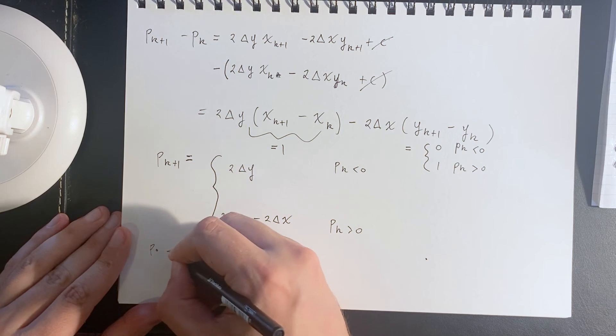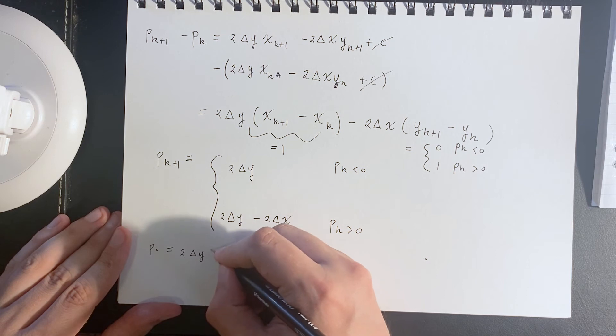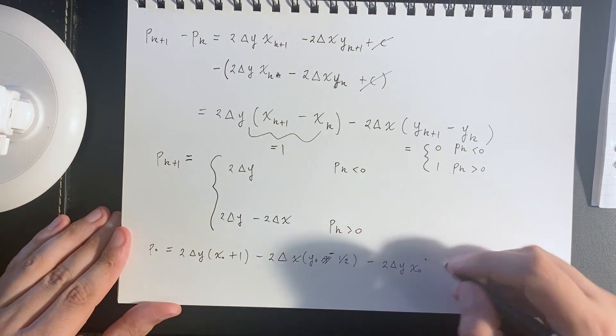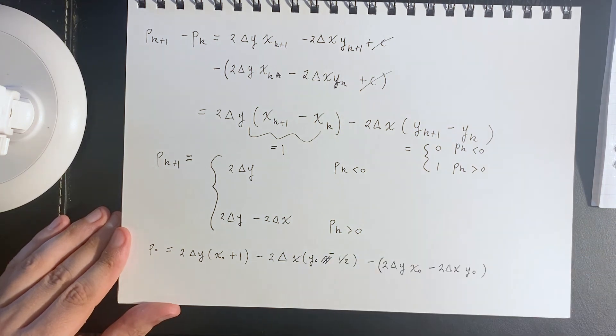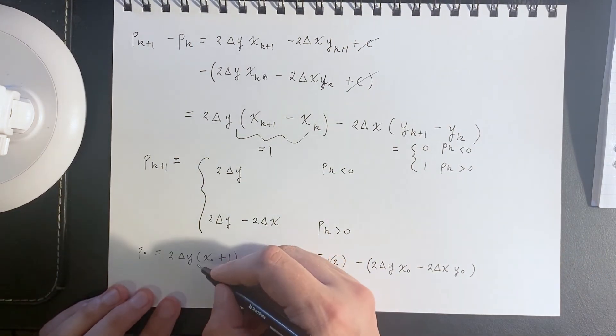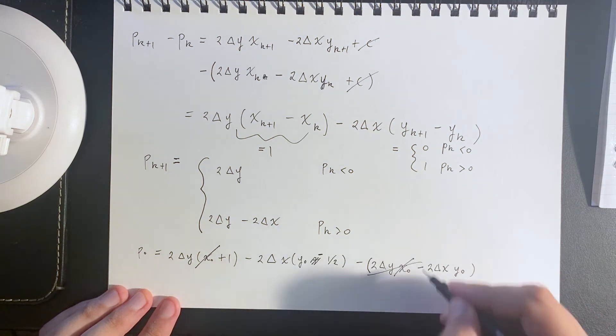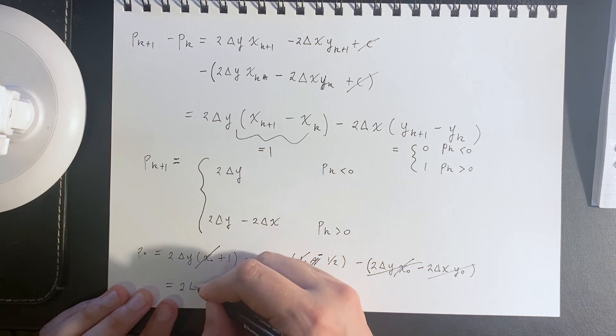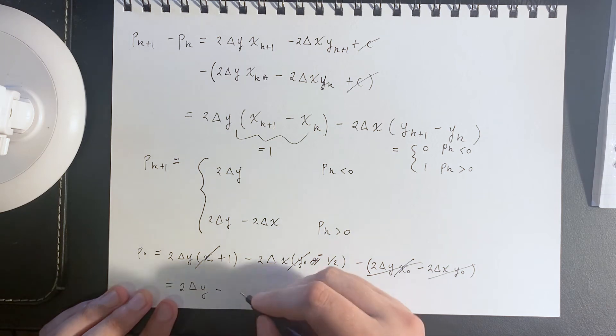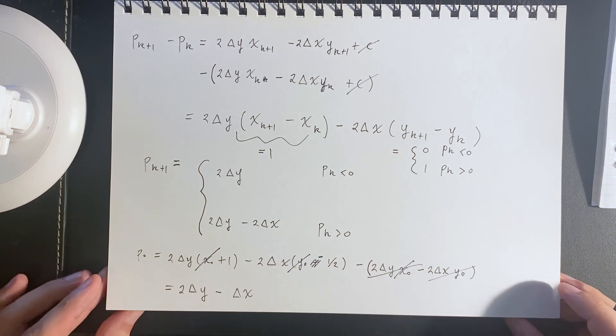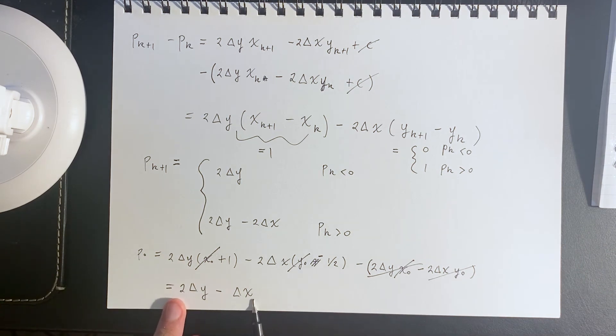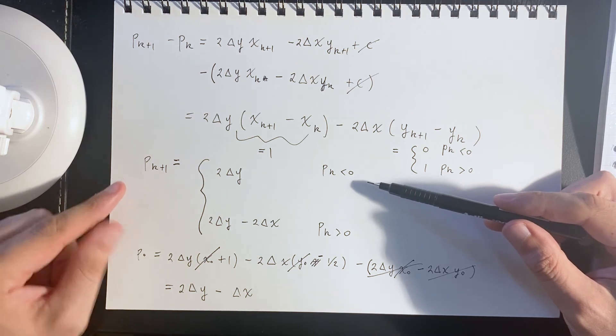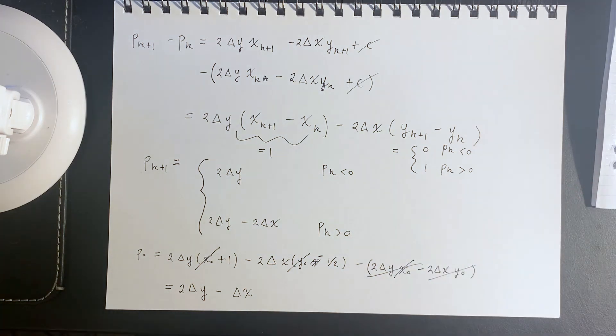We'll go p_0 equals... There we have it. We can see some of these terms are going to cancel out. x_0 cancels with x_0, and the negative 2y_0 cancels out. What this comes down to is 2 delta y minus a half times 2 delta x. We have this as our initial decision parameter, and then we can get successive decision parameters by this recursion relation. This is a pretty accurate way of determining lines.